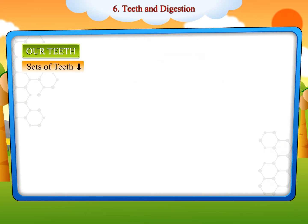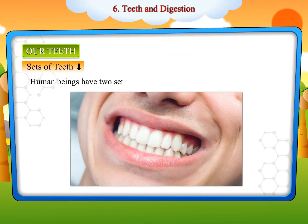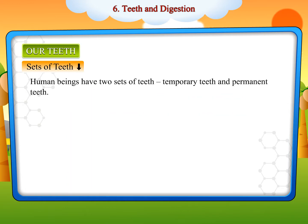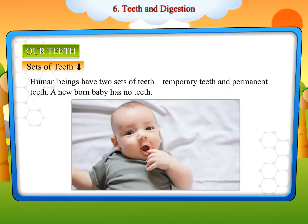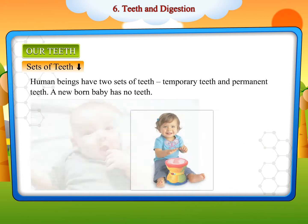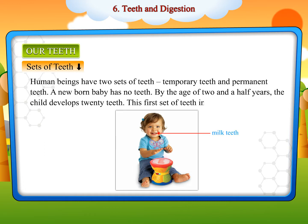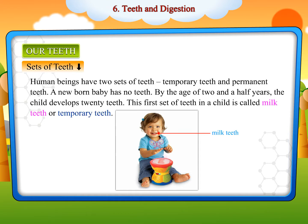Human beings have two sets of teeth: temporary teeth and permanent teeth. A newborn baby has no teeth. By the age of two and a half years, the child develops twenty teeth. This first set of teeth in a child is called milk teeth, or temporary teeth.